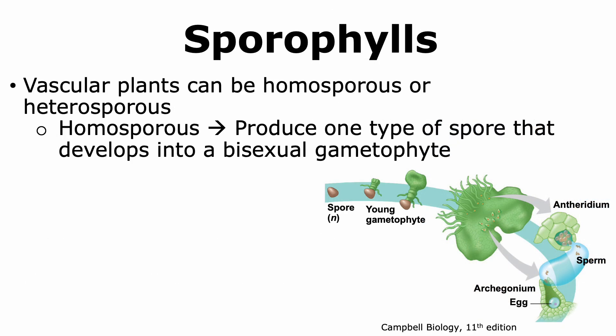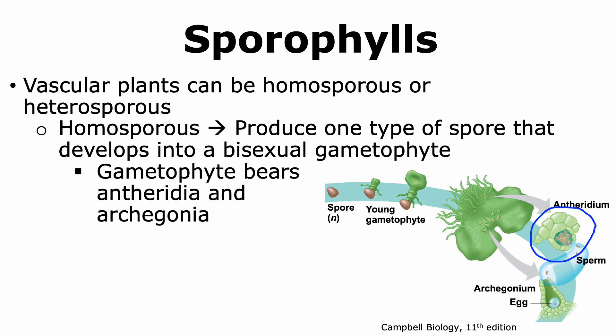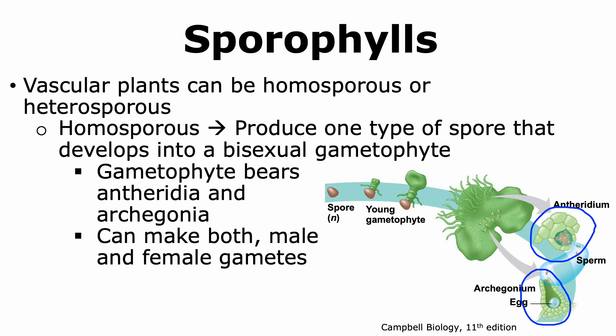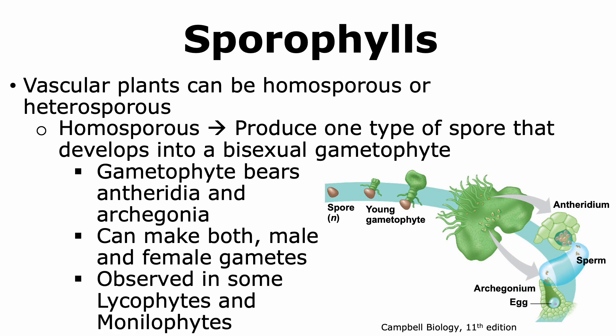Vascular plants can be homosporous or heterosporous. Homosporous vascular plants are those that produce only one type of spore. That spore can develop into a gametophyte which is bisexual. A bisexual gametophyte is one that bears both types of gametangia — it can make the male gametangium, called the antheridium, as well as the female gametangium, called the archegonium. The antheridium and archegonium give rise to the male and female gametes respectively, so the single gametophyte can make both male and female gametes. Homospory is observed in certain types of seedless vascular plants, like lycophytes and monilophytes.